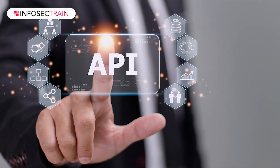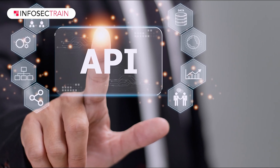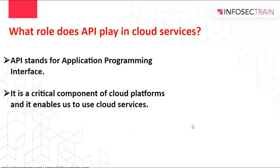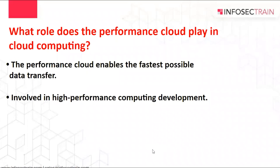What role does API play in cloud services? API stands for Application Programming Interface and it is a critical component of cloud platforms. APIs enable us to use cloud services in the following ways: it specifies how one or more programs should communicate with one another, it facilitates the building of applications and the integration of cloud services with other platforms, and it reduces the need to write entire programs from scratch.